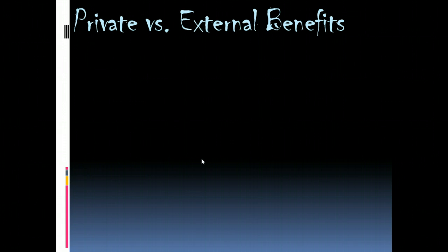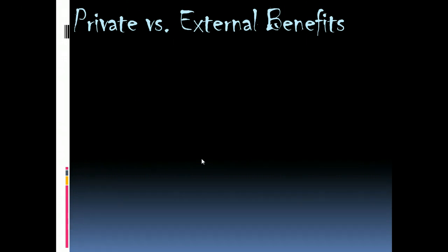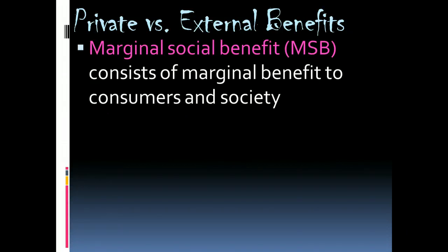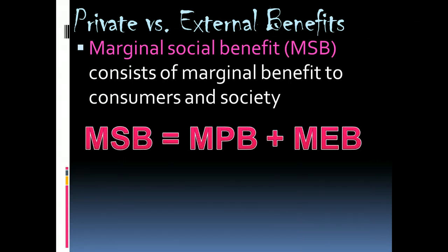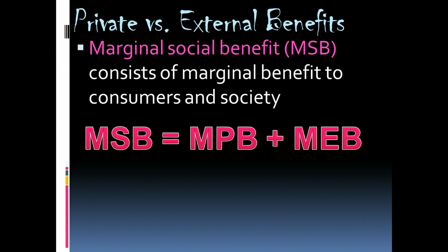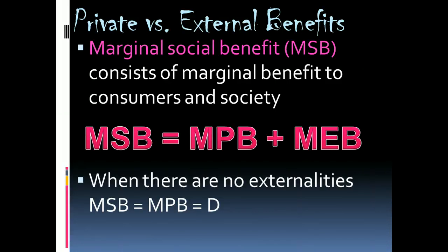Now let's look at how to graph externalities and identify what are known as Pigouvian taxes or Pigouvian subsidies — the amount of payments necessary to get us to a socially optimum output. Marginal social benefit takes into account both the marginal personal benefit plus the marginal external benefit — not only what do I get out of it, but what do people outside of me get out of my activity. In a world with no externalities, marginal social benefit equals marginal personal benefit, which is essentially our demand curve.